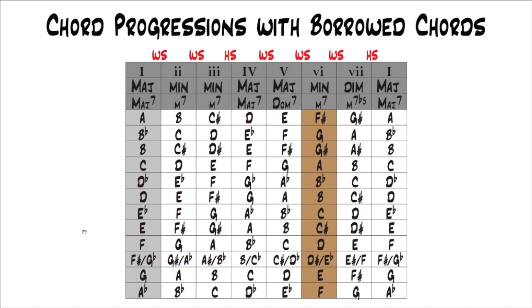In this lesson, I'm going to explain how to take a major chord progression and borrow a chord or chords from the parallel minor key, or vice versa — take a minor chord progression and borrow chords from the parallel major key. You remember that every major key has a relative minor key. For example, in the key of C, the relative minor key is A. So A minor is the relative minor key of C major.